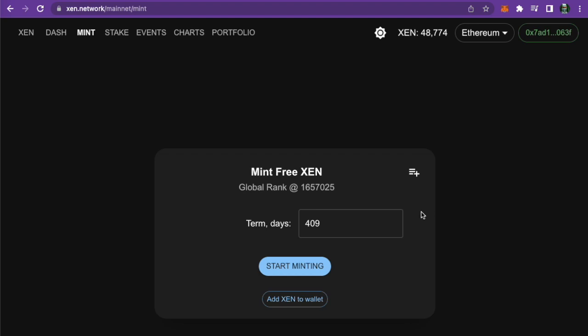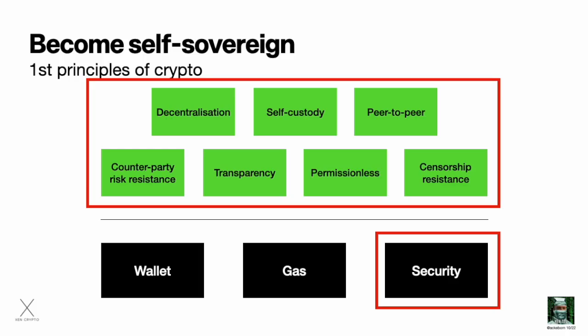You have now minted free Zen by just paying some gas and waiting. Remember, the longer you choose your mint term the more Zen you will get according to the minting formula — I just chose one day, but you can choose up to 409 days. While you wait to claim your mint, your next steps will be to learn about security and hardware wallets and also the first principles of crypto. When you later have your Zen you can also stake it, which means you lock up your Zen tokens and receive an interest we call APY. In my next video I will show you how you can stake your Zen.